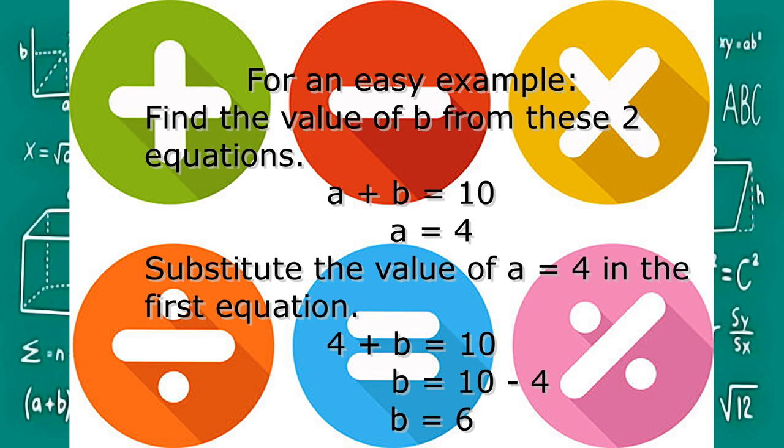For an easy example, find the value of B from these two equations. We substitute the value of A in the first equation with the given value of A in the second equation to find the value of B.